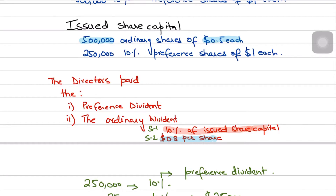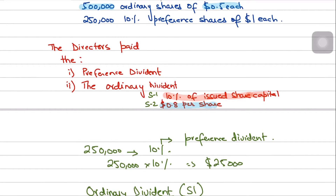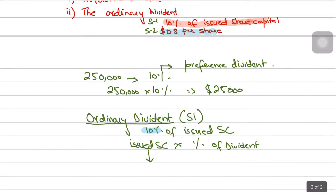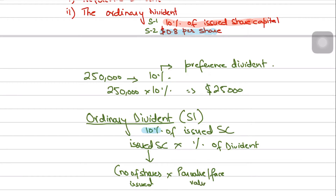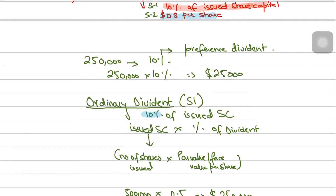To find the issued share capital, multiply the number of shares issued by the par value (face value or nominal value) per share. In our example, 500,000 shares multiplied by $0.50 face value gives an issued share capital of $250,000.